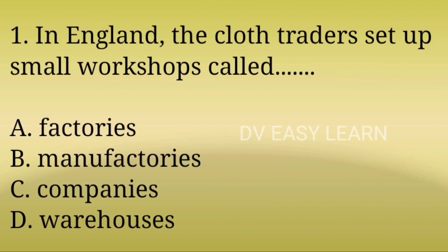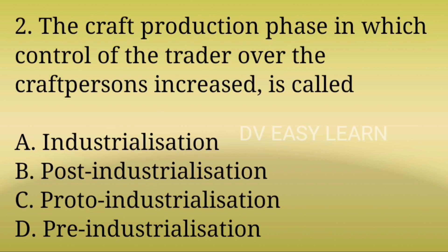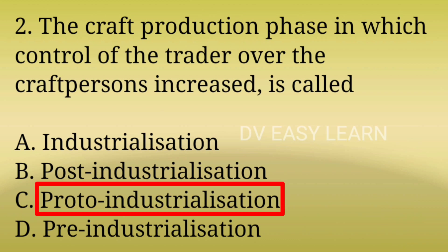1st Question: In England, the cloth traders set up small workshops called? Correct answer: Manufacturers. 2nd Question: The craft production phase in which control of the trader over the craft persons increased is called? Correct answer: Proto-Industrialization.